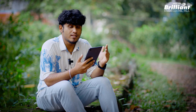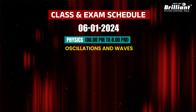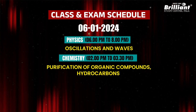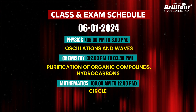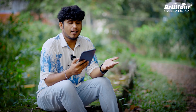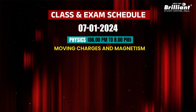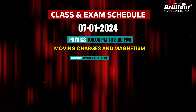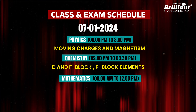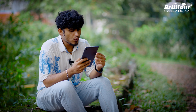The next topic in Unit 5 is Physics — Oscillations and Waves; Chemistry — Purification of Organic Compounds, Hydrocarbons; Mathematics — Circle. Following that, Physics covers Moving Charges and Magnetism; Chemistry covers D and F Block, T Block; Mathematics covers Conic Sections. Then Unit 4 topics will be completed.